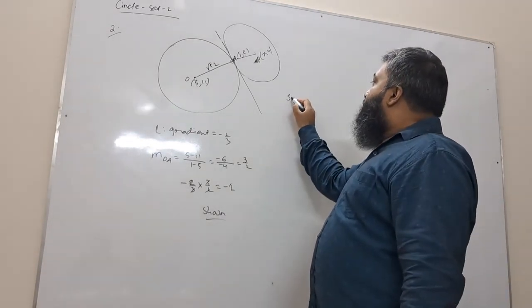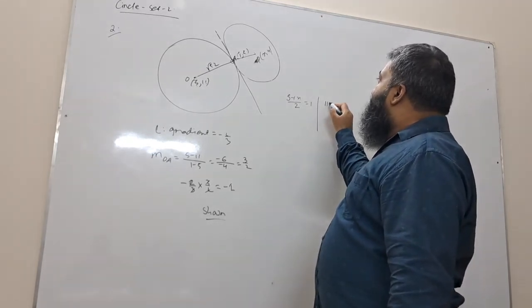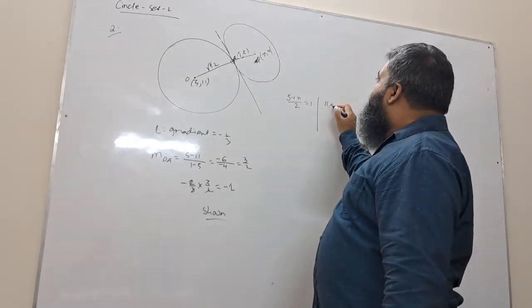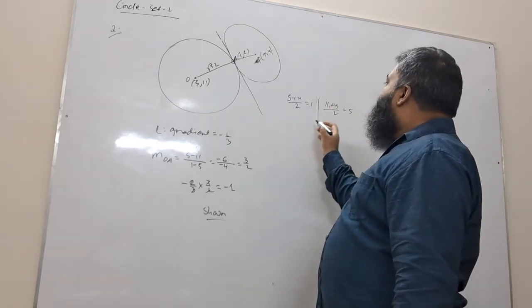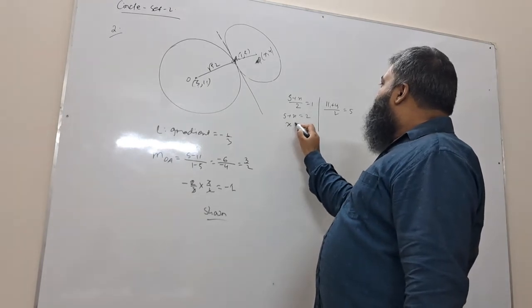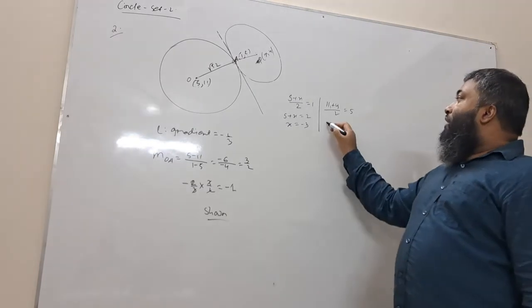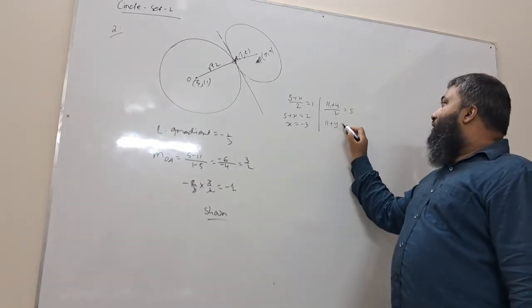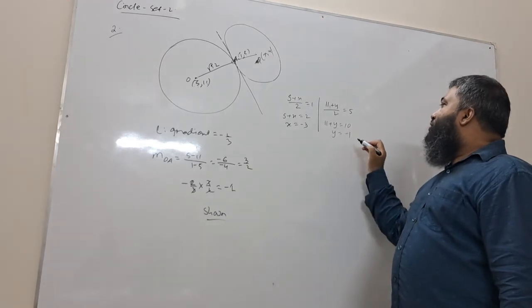5 plus X divided by 2 equals 1. 5 plus X equals to 2. X equals to 2 minus 5, that's minus 3. Now, 11 plus Y equals to 10. So Y equals to 10 minus 11, that's minus 1.